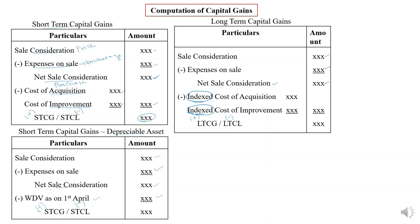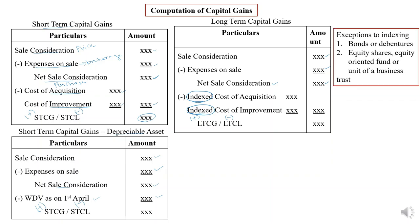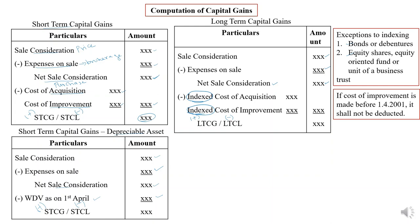Before seeing how to calculate index cost of acquisition, there are certain exceptions — for some assets we will not calculate index cost. The exceptions are bonds and debentures, equity shares, and equity-oriented funds or units of a business trust — for all these there is no need for indexing. Another exception is cost of improvement: if the cost of improvement was made before 1-4-2001, it shall not be deducted — you cannot claim it. Only if the cost of improvement was incurred after 1-4-2001 can you claim it.